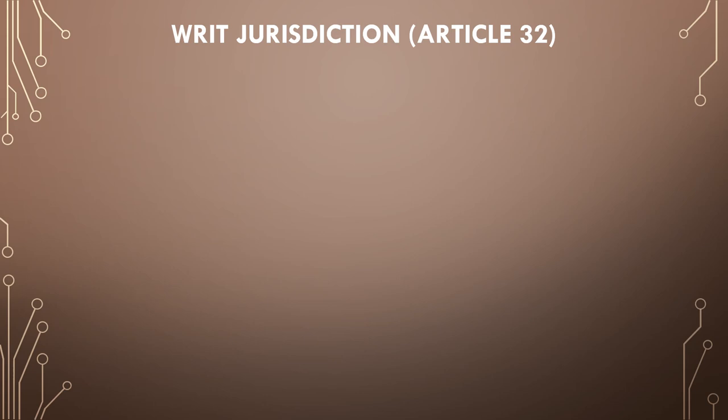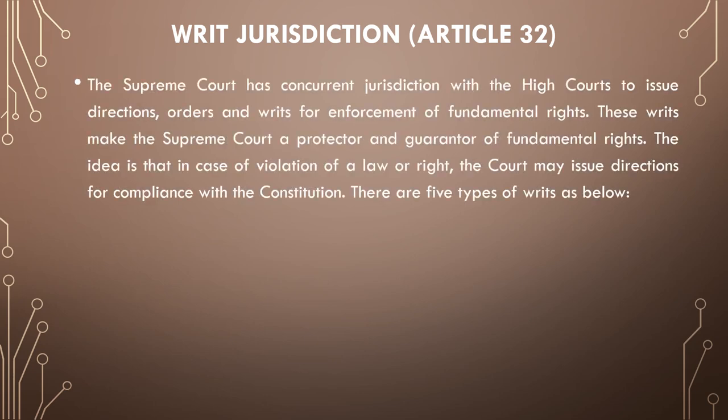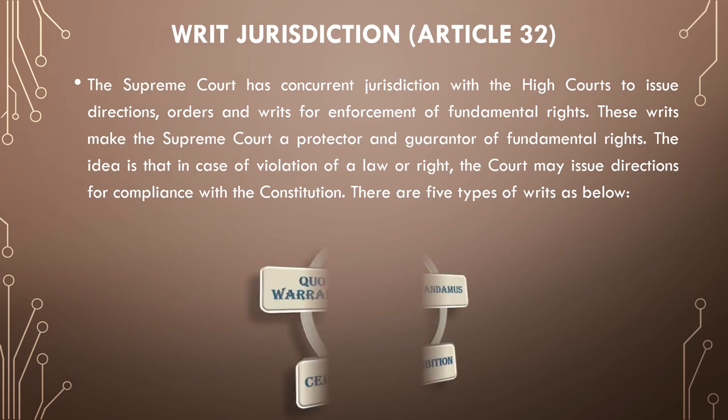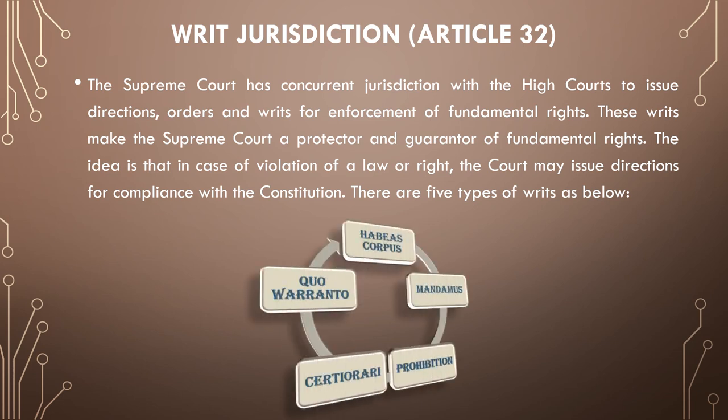The last jurisdiction of the Supreme Court, which is very important, is Article 32, that is writ jurisdiction. The Supreme Court has concurrent jurisdiction with the high court to issue directions, orders, and writs for enforcement of fundamental rights. These writs make the Supreme Court a protector and guarantor of fundamental rights. There are five types of writs: the first is habeas corpus, second is mandamus, third is prohibition, fourth is certiorari, and fifth is quo warranto.